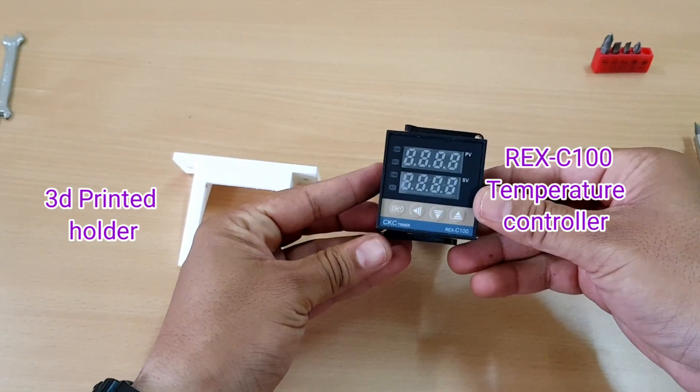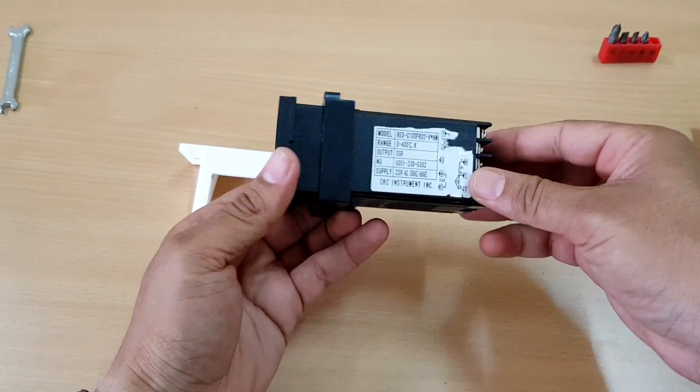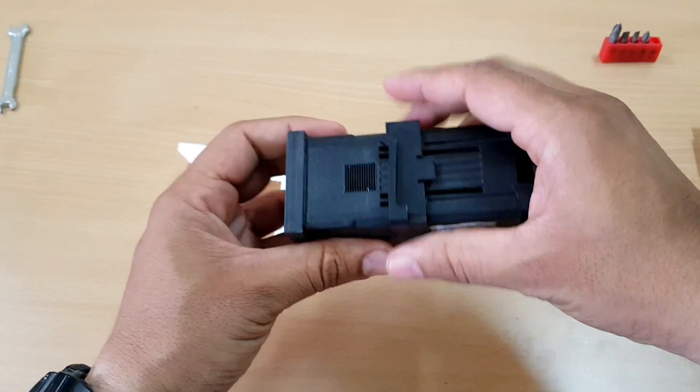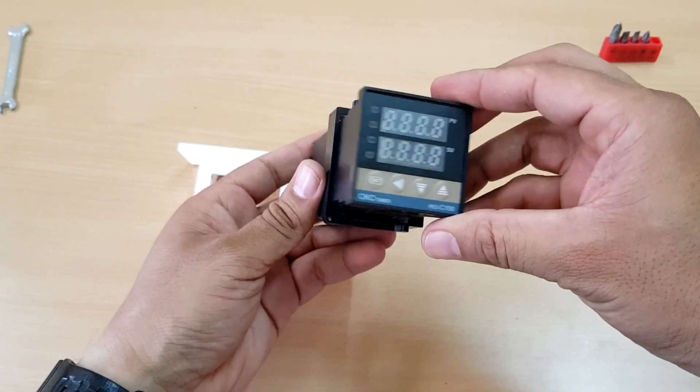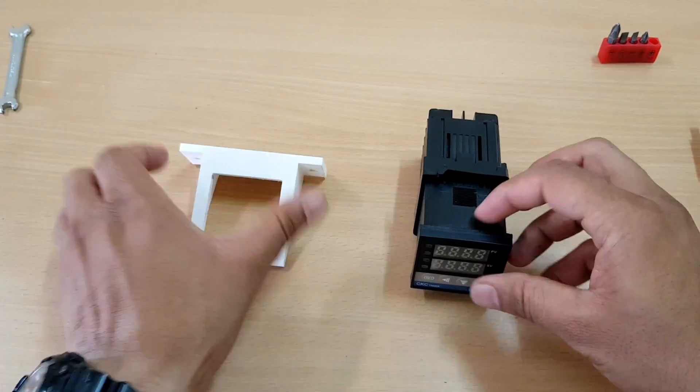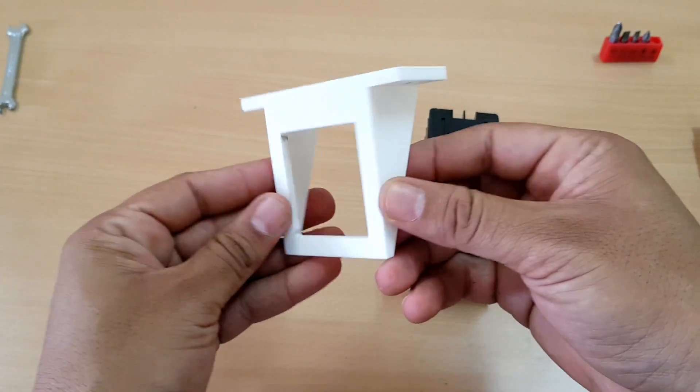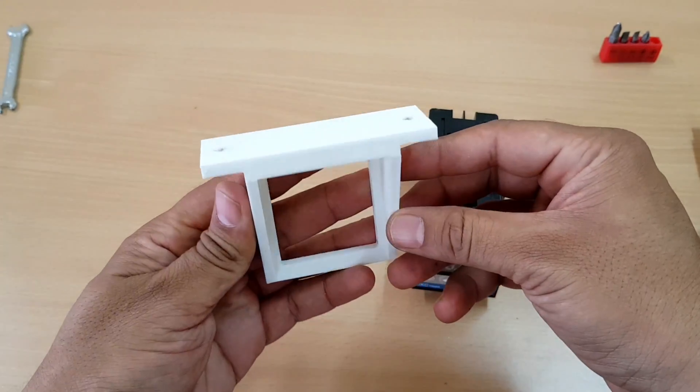This is the Rex C100 temperature controller. It comes with locking mechanism and a terminal at the rear. I have made 3D printed holder for the same.